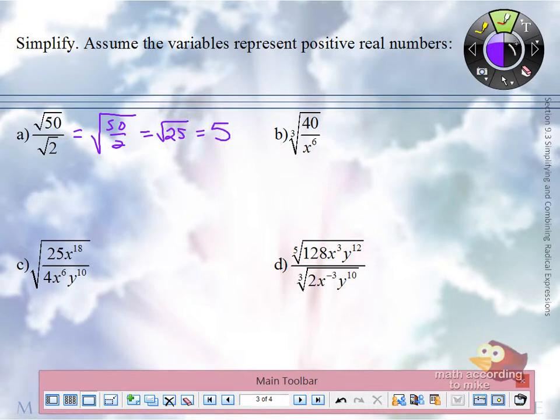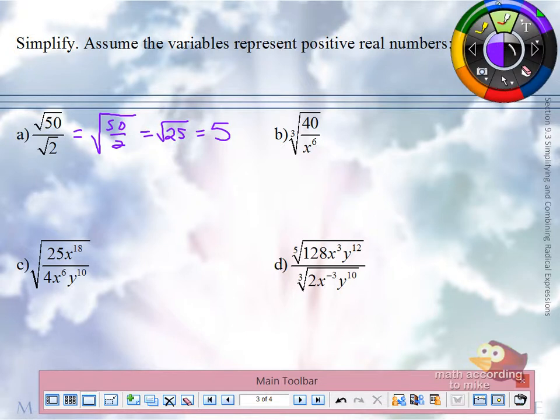The alternative way to do it, by first using the product rule, is to remember that 50 is 25 and 2. Correct, so what happens to the square root of 2's? They cancel out, and square root of 25 is our 5.